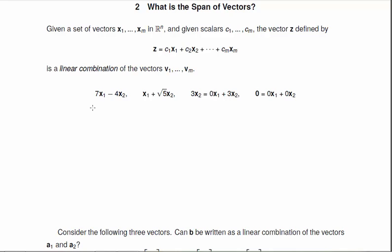So given two vectors x1 and x2, 7x1 minus 4x2 would be a linear combination. 1x1 plus the square root of 5x2, also a linear combination. 3x2 is a linear combination because we can write this as 0x1 plus 3x2. And 0 is a linear combination since we can write 0x1 plus 0x2.